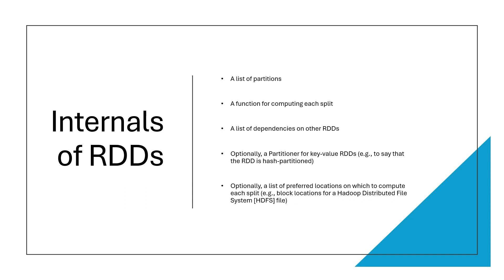RDDs can also be looked at as a list of preferred locations on which to compute each split. This is why you have better control — you can control how the data is physically located. A split is the whole set of records that each RDD constitutes, and you can control where each partition of data goes. At a very low level, when we talk about the Hadoop distributed file system, it can refer to the block location. So internally, RDD is a list of partitions with dependencies, optional key-value partitioning, and controllable data placement.